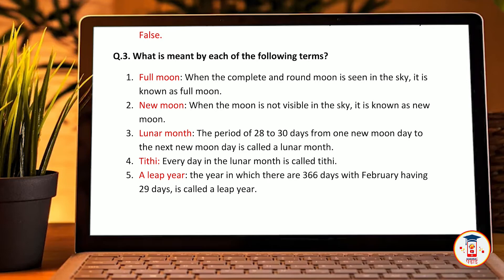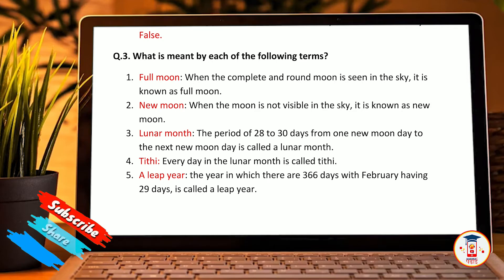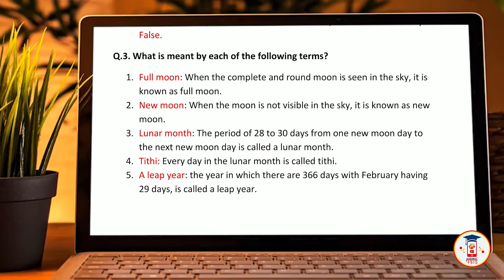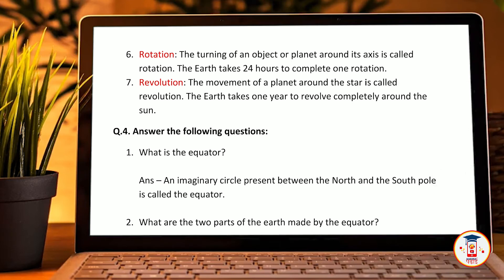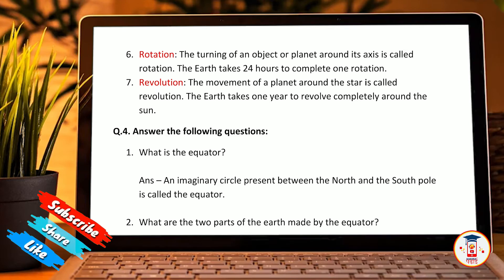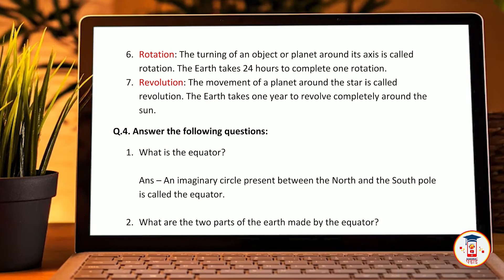Tithi: every day in a lunar month is called a Tithi. Leap year: the year in which there are 366 days with February having 29 days is called a leap year. Rotation: the turning of an object or planet around its axis is called rotation. The earth takes 24 hours to complete one rotation. Revolution: the movement of a planet around a star is called revolution. The earth takes one year to revolve completely around the sun.